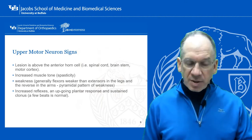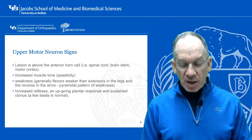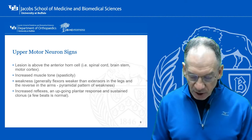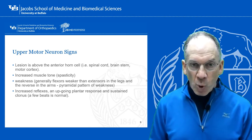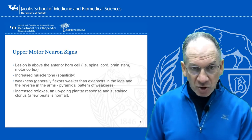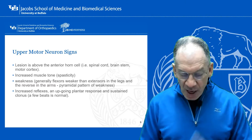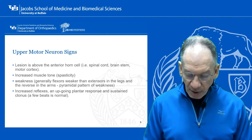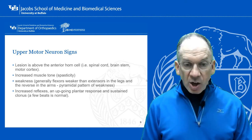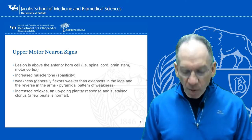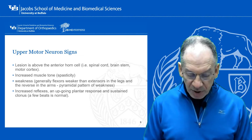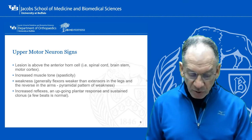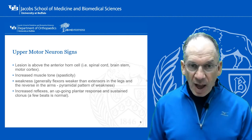Upper motor neuron signs — starting from the top down. That means the lesion is above the anterior horn cell, so it can be in the spinal cord, brain stem, or motor cortex. When someone has an upper motor neuron lesion: increased muscle tone, spasticity — which translates into being hyperreflexic — weakness (generally the flexors are weaker than the extensors in the legs, and the reverse in the arms), increased deep tendon reflexes, and abnormal signs. In the foot: Babinski sign and clonus. On the hand: Hoffman sign. Summary — upper motor neuron: increased muscle tone, weakness, hyperreflexia, and abnormal signs of cord compression.